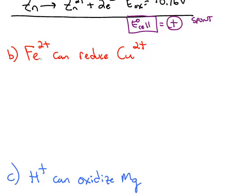Similar question in part B. True or false? Iron 2+ can reduce copper 2+. So if we're trying to reduce copper 2+, we can find that in the table the way it's written. Copper 2+ plus 2 electrons makes copper. This has a standard reduction potential of positive 0.34 volts.